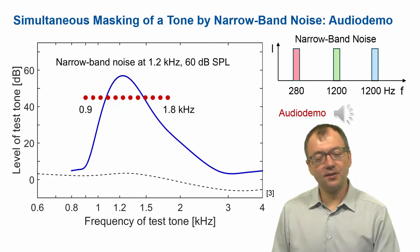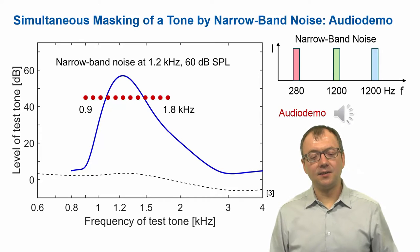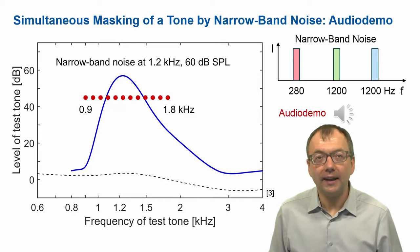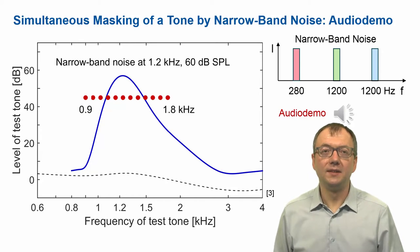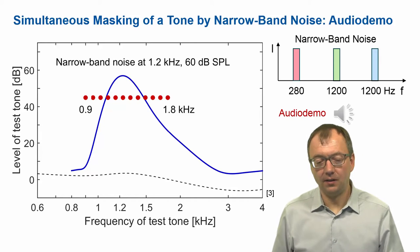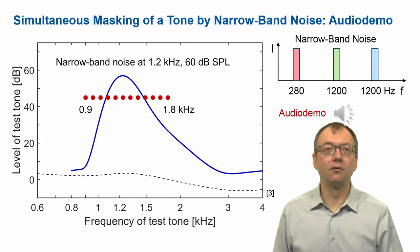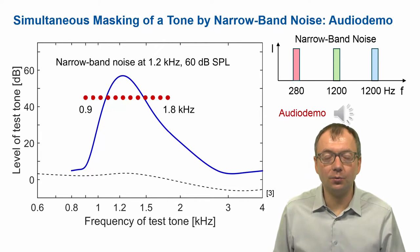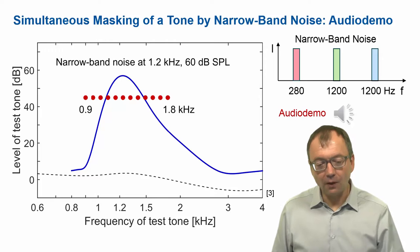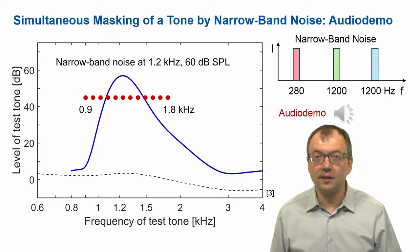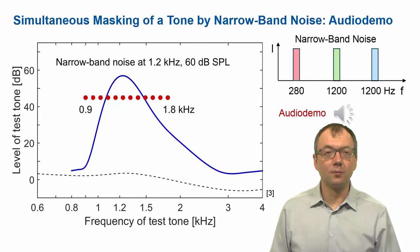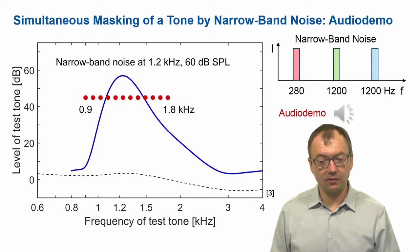The 900 Hz to 1800 Hz range is a one-octave range, and we see that the noise, which was not too strong relative to the tones, was masking still quite a bit of this one-octave range.